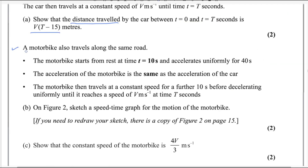For the next part: a motorbike also travels along the same road. The motorbike starts from rest at t equals 10 seconds and accelerates uniformly for 40 seconds. The acceleration of the motorbike is the same as the acceleration of the car. The motorbike then travels at constant speed for a further 10 seconds before decelerating uniformly until it reaches the speed of v meters per second at time T seconds. On figure 2, sketch a speed-time graph for the motion of the motorbike.